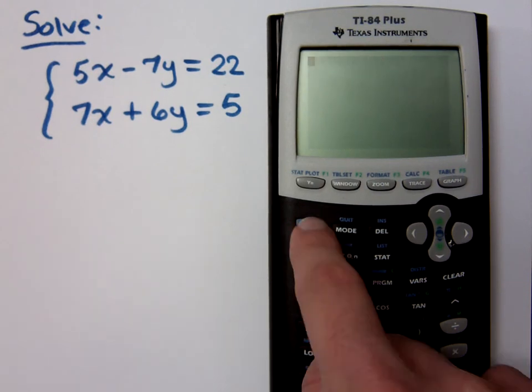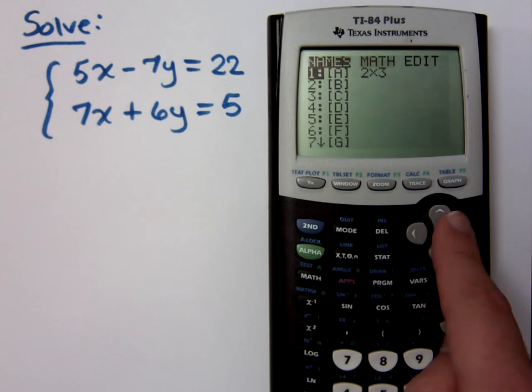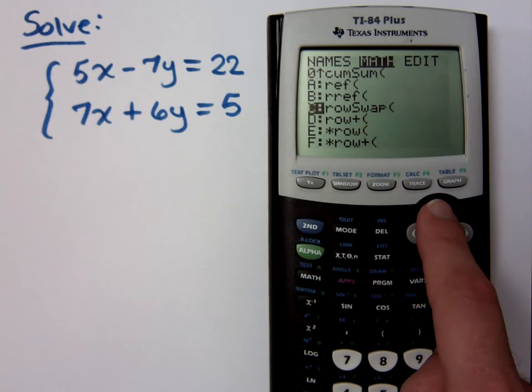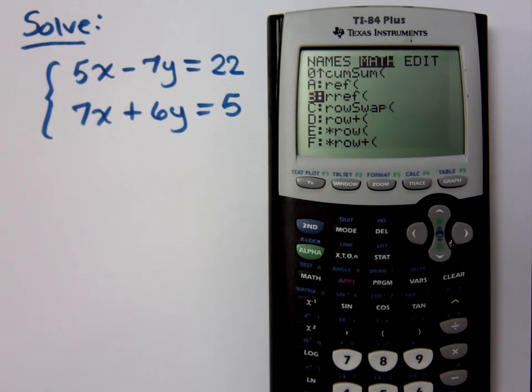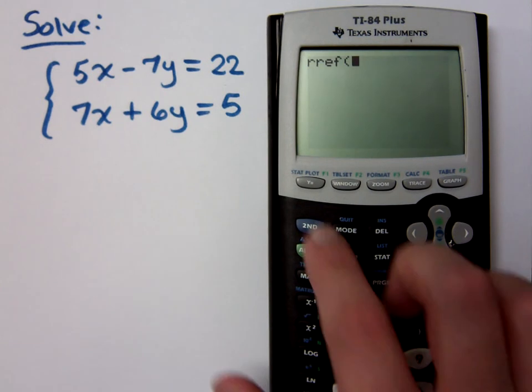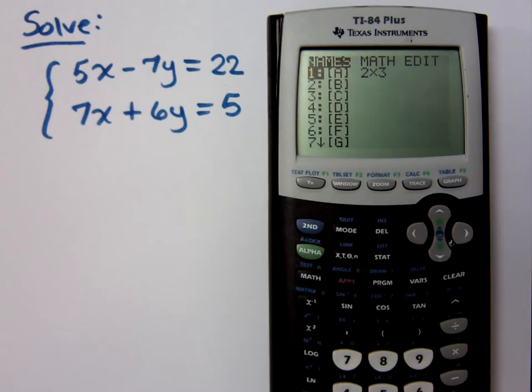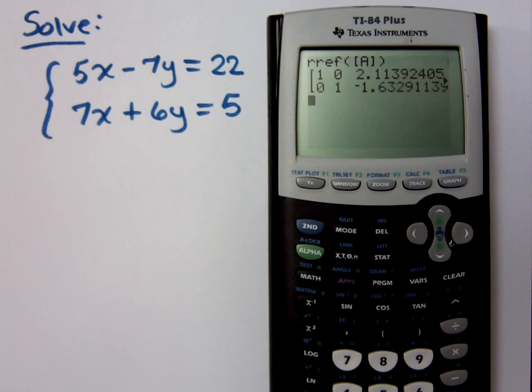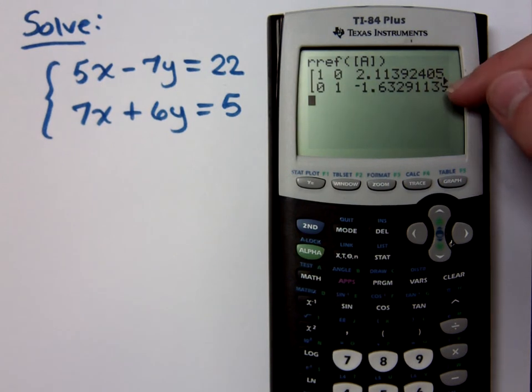So if I quit out of this and I go back to my matrix, I want to find the reduced row echelon form of A. And I get some nastiness here, do you all agree?